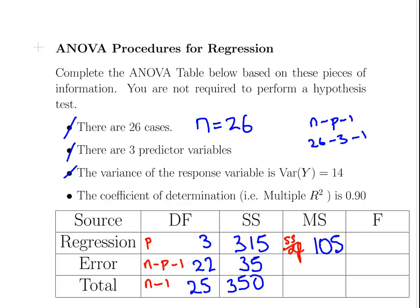I just dropped my calculator, so I'll pause for a second. 35 divided by 22 is 1.59.